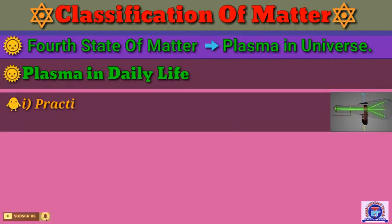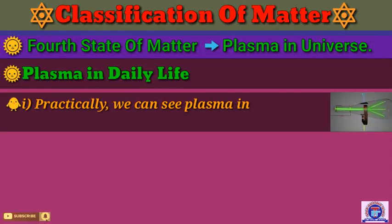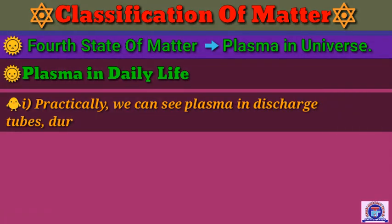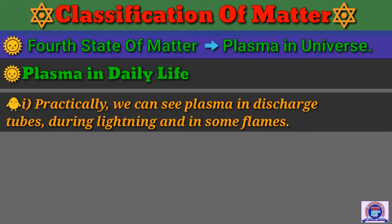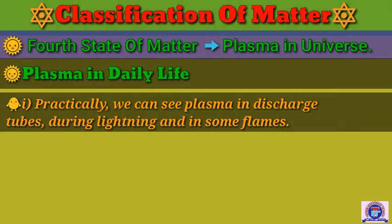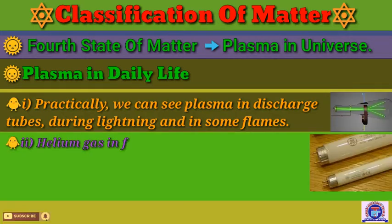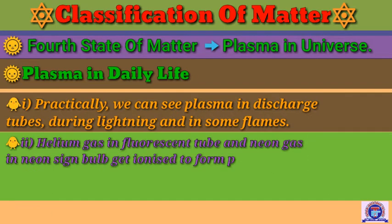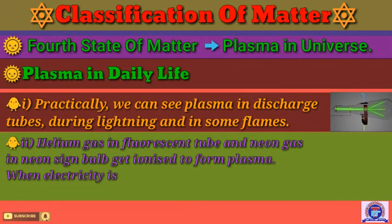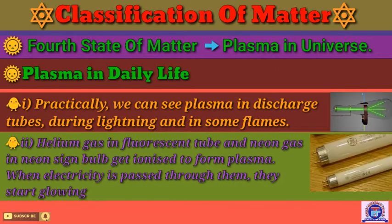In daily life, plasma can be seen in discharge tubes during lightning and in some flames. Helium gas in fluorescent tubes and neon gas in neon sign bulbs get ionized to form plasma when electricity is passed through them, causing them to start glowing.